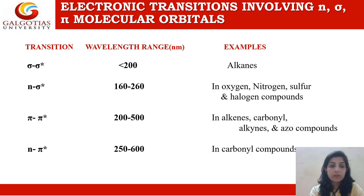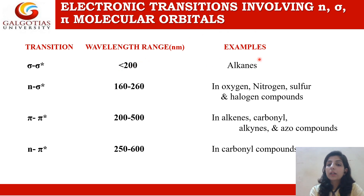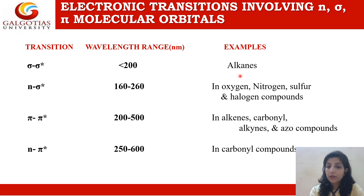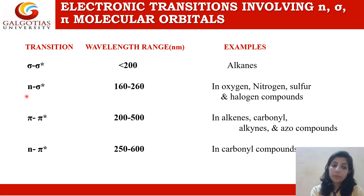We will first mention the different types of transitions, then the wavelength range at which each particular transition will occur, and then look at different examples in which these transitions are occurring. We can have sigma electrons, non-bonding electrons, and pi electrons.